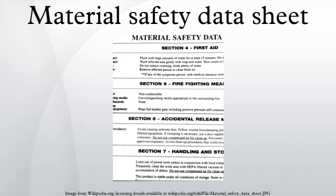Reviews of material safety data sheets by the US Chemical Safety and Hazard Investigation Board have detected dangerous deficiencies. The Board's Combustible Dust Hazards study analyzed 140 data sheets of substances capable of producing combustible dusts. None of the MSDSs contained all the information the Board said was needed to work with the material safely.